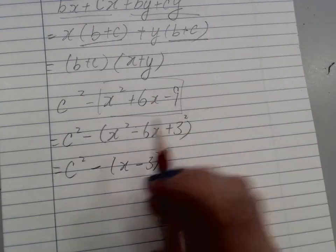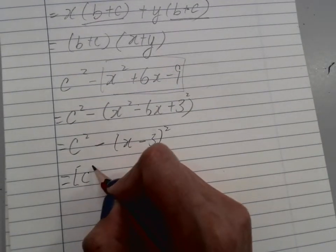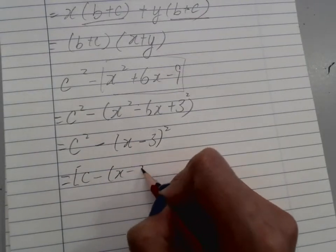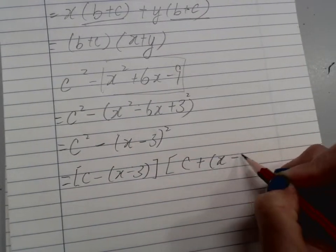And now, after I group the last three, I will have the difference of two squares. I have c minus x minus 3 and c plus x minus 3.